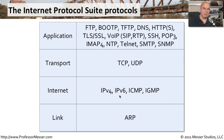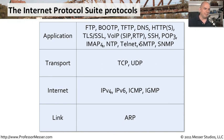The next layer up, the transport layer, is very much like the transport layer of the OSI model, though here it is the third layer up. TCP and UDP are the workhorses of the transport layer when we're talking about the TCP/IP protocol suite.